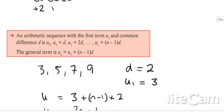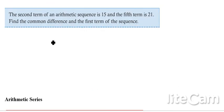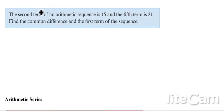I've got u1, which I'm not sure what it is yet, plus something, and that will take me to the second term. So u1 plus d is going to be equal to 15. And the fifth term is going to be the first term plus 4 lots of d, which is going to be 21.